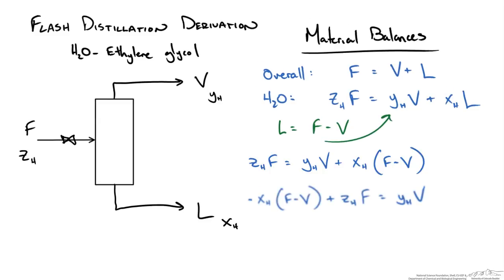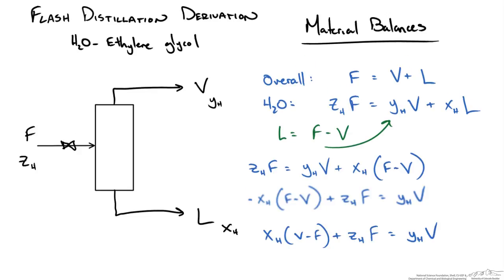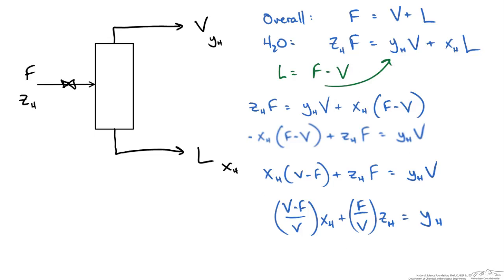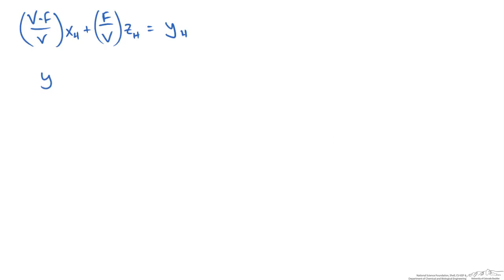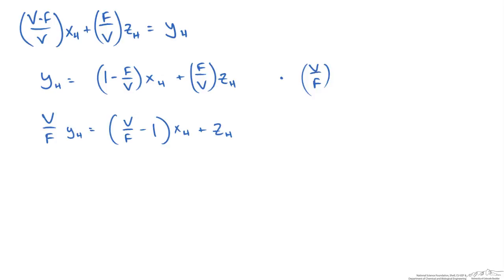We rewrite the equation and bring the feed variable to one side. To solve for the mole composition y_H, we divide everything by V. After rearranging the arithmetic, we get y_H equals 1 minus F/V times x_H plus F/V times z_H. Multiplying through by V/F and solving for y, we arrive at the form y = mx + b.